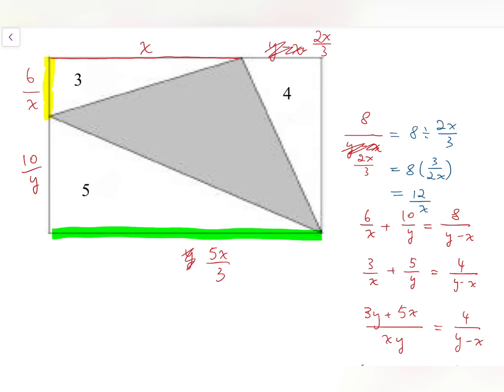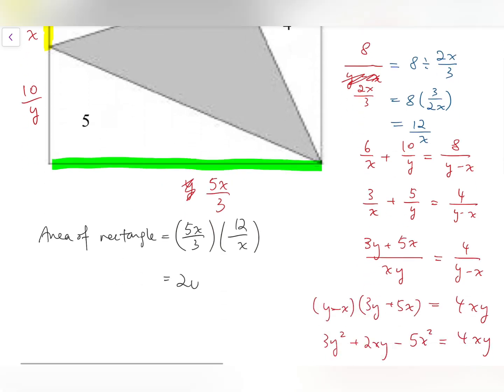So now looking at the whole rectangle, the area is 5x over 3 multiplied by 12 over x and is 20. So I've managed to find the area of the whole rectangle.